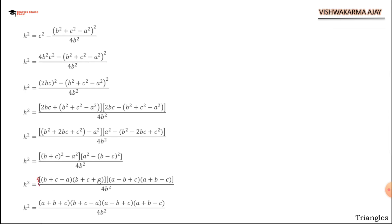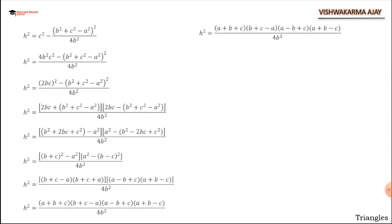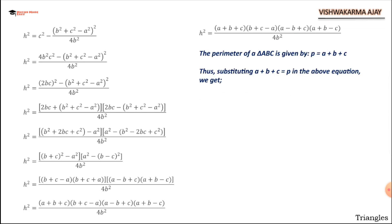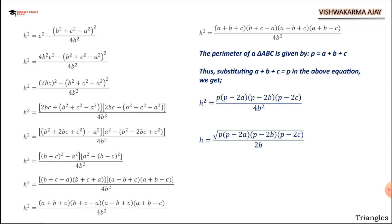Removing brackets — since all terms are multiplied — and rearranging so that (a plus b plus c) appears together, which is our perimeter p. Taking the square root of h squared: the denominator 4b squared becomes 2b. So h equals (1 over 2b) times root of (a plus b plus c)(b plus c minus a)(a plus c minus b)(a plus b minus c), where each factor contains (p minus 2a), (p minus 2b), (p minus 2c) after substituting a plus b plus c equals p.